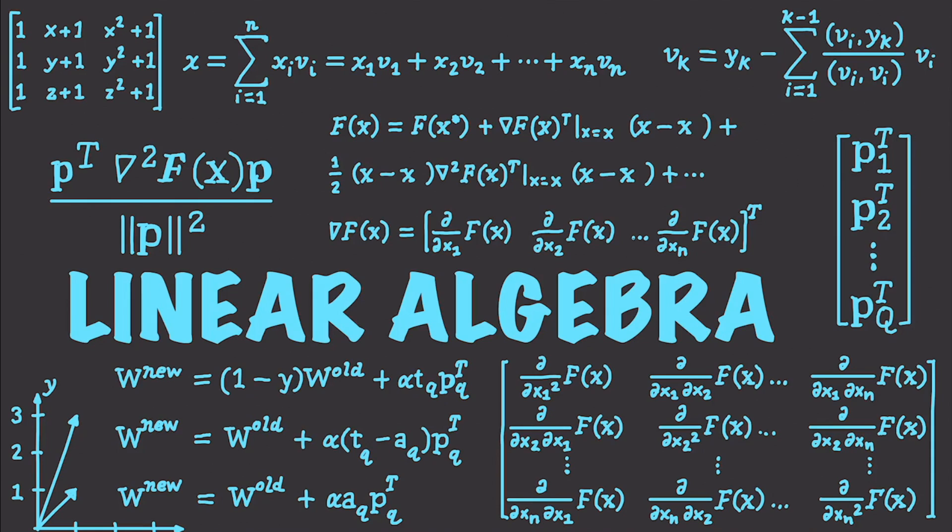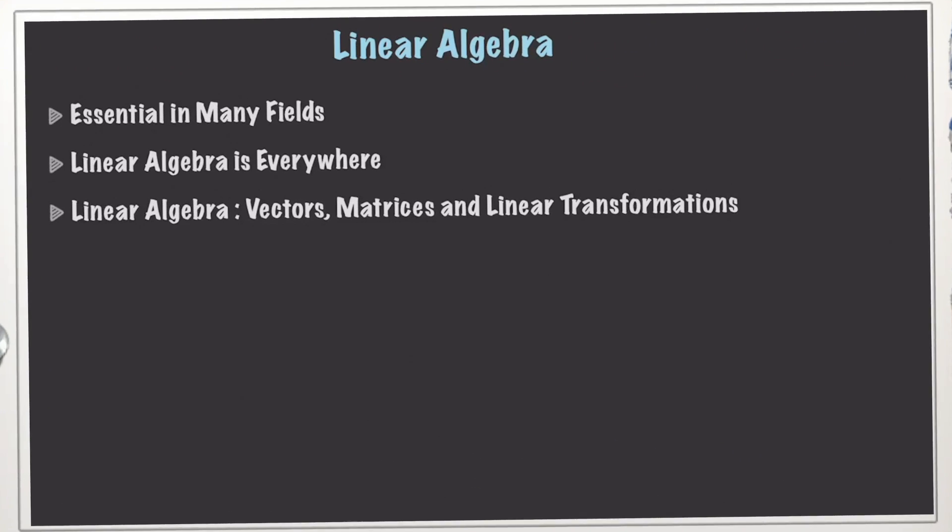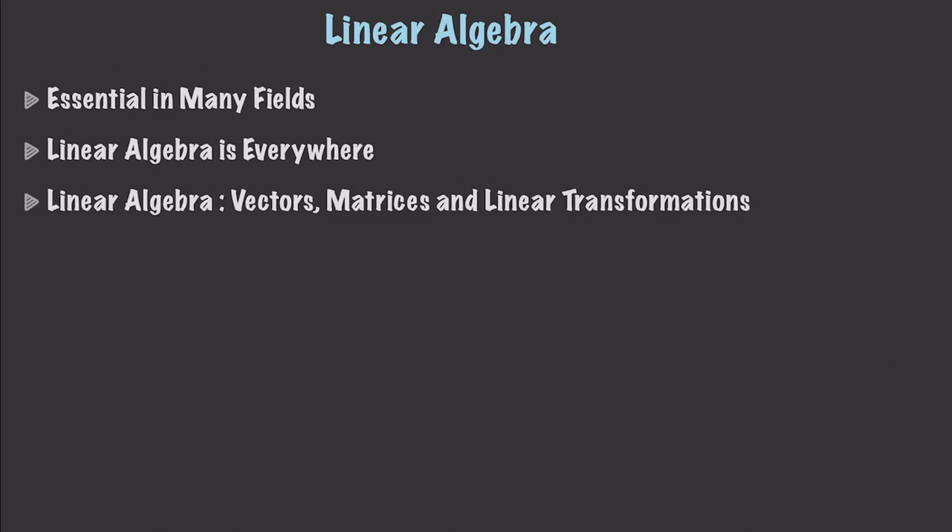It is an essential branch of mathematics in pretty much every field, including chemistry, computer graphics, physics, economics, statistics, machine learning, and engineering. It is used to model many types of different natural phenomena, create unbreakable cryptography algorithms, maximize yield in agriculture, and make stock market predictions. It's used everywhere, and most people are unaware of that.